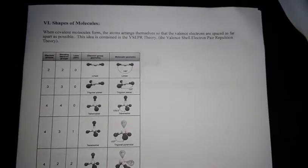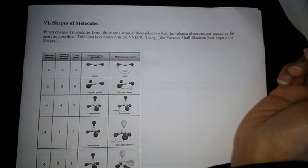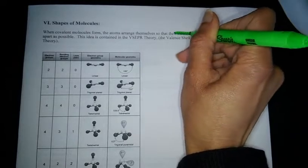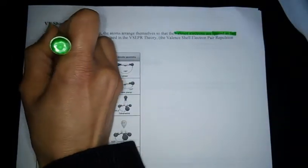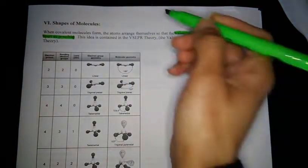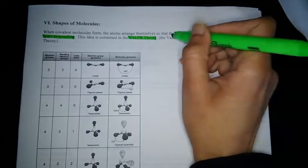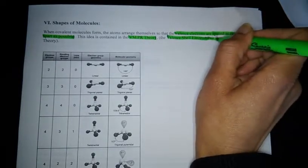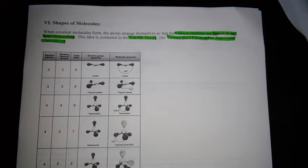Now let's talk about shapes of molecules. When covalent molecules form, the atoms arrange themselves so that the valence electrons are spaced as far apart as possible. This idea is called the VSEPR theory — valence shell electron pair repulsion. Today we're talking about the shapes of these covalent molecules, and we're going to look at the different shapes that they form. It's always a good idea to use the Lewis dot structure to help you understand how these shapes are formed.